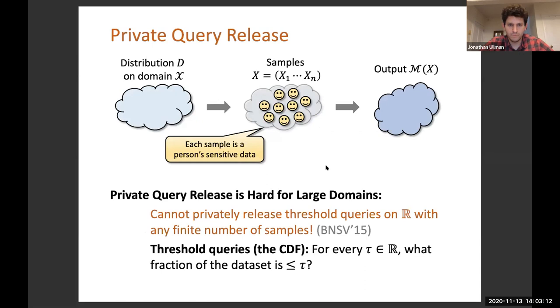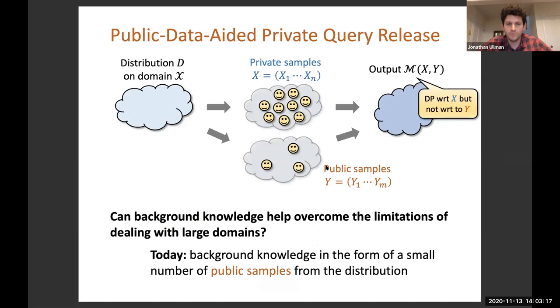The question we want to know is, is there some way to incorporate some kind of background knowledge to help overcome the limitations of dealing with large domains? For today's talk, the kind of background knowledge we explore is having access to a small number of public samples from the same distribution.